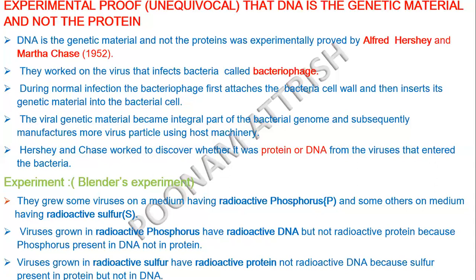Those elements were chosen which are present in one molecule but absent in another. Phosphorus is present in DNA while sulfur is present in protein. If they had taken carbon, hydrogen, oxygen, or nitrogen, they could not differentiate between the two because these elements are common in both. So they used radioactive phosphorus for DNA and radioactive sulfur for protein.